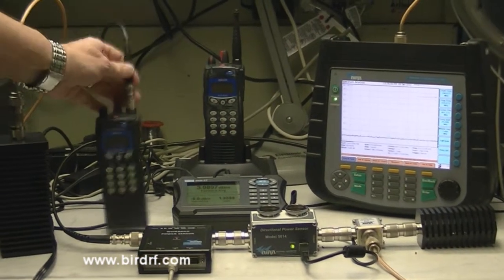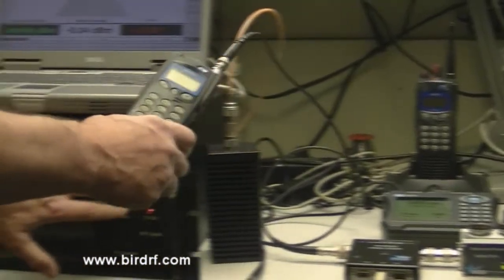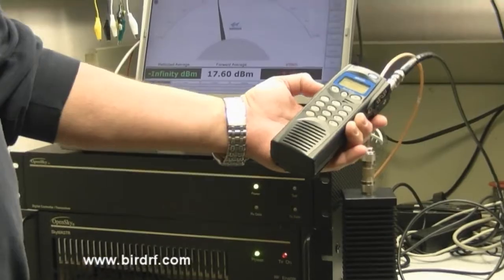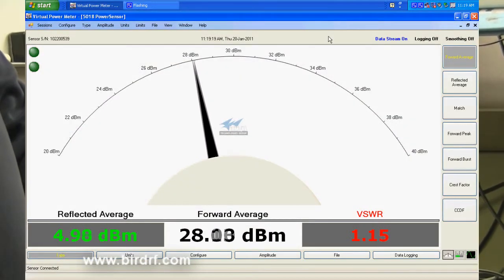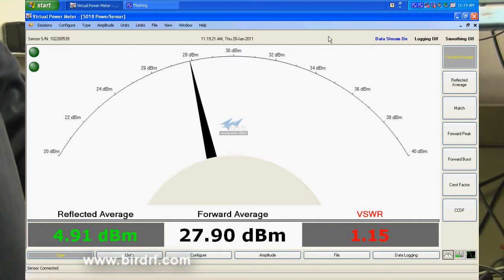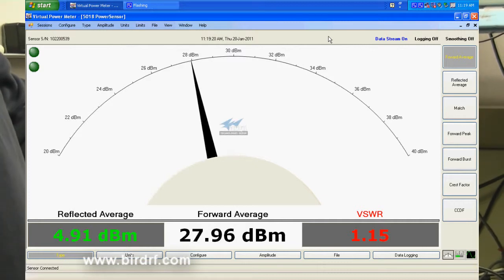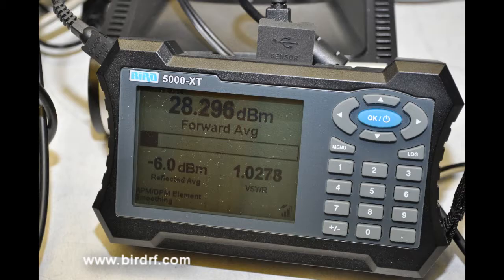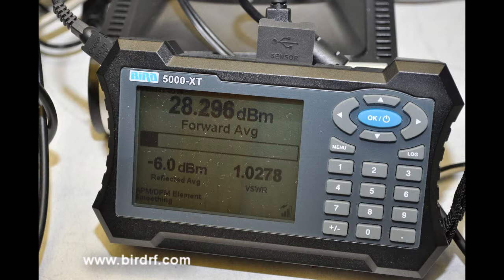It's a simple procedure to test the power once all the equipment is running. We key the microphone on the mobile unit. It comes up to a level preset by the actual equipment. And you can see it's running 28 dBm. And on the XT it's also running 28.2 dBm.